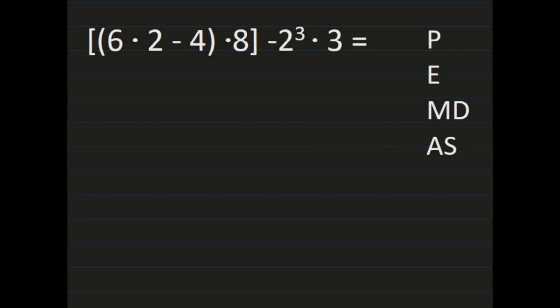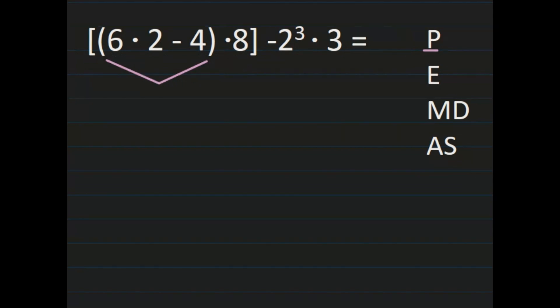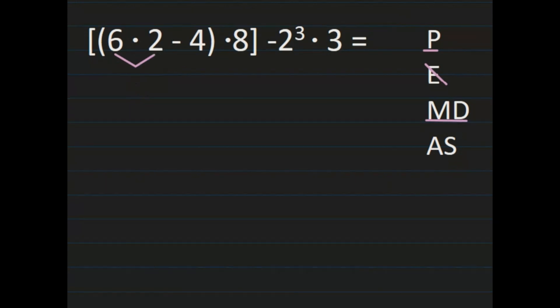As we start this example, notice that we have brackets, parentheses, and exponents. Using PEMDAS, I start with P — grouping symbols — which means starting with the brackets. Inside the brackets I have parentheses, and I start with the lowest level grouping symbols, so I'm working inside the parentheses first. Inside these parentheses I don't see any exponents, so I look at multiplication and division. I have 6 times 2, which is my first step. 6 times 2 is 12.